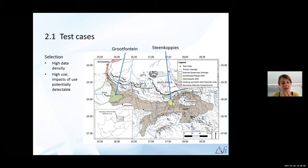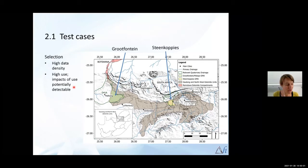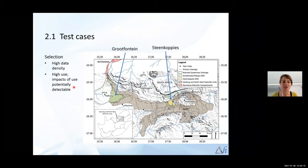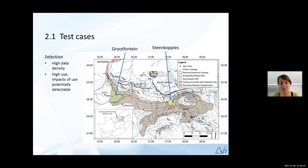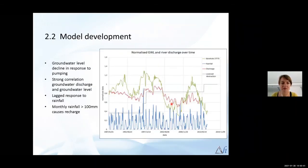We tried to do the same but essentially found we didn't have enough data to train machine learning models using the Ramotswa aquifer. We needed an area with really high density data and high groundwater use, so that impacts of that use were potentially detectable in the datasets. The machine learning model isn't going to be able to predict any of that unless it sees some of it in its training data. So we moved to the South African Dolomites and used Krutfontein and Steenkopies, where there are a huge number of boreholes abstracting groundwater — we had basically the maximum amount of data available in this country from those two sites. The variables used for the models were weather data, groundwater use data, and groundwater discharge.